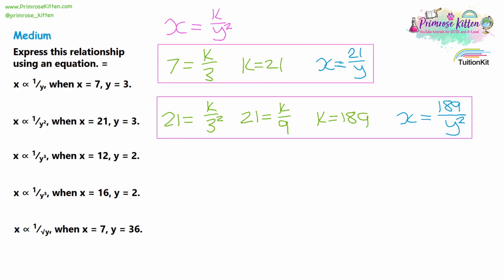Question 3 has a similar situation, but instead of y squared we have y cubed. So in our equation we use a cubed symbol. Substituting x equals 12 and y equals 2: 2 cubed is 2 times 2 times 2, which is 8. So 12 equals k over 8. Multiplying both sides by 8 gives k equals 96. Our equation is x equals 96 over y cubed. It's very important to get the cube symbol in there.